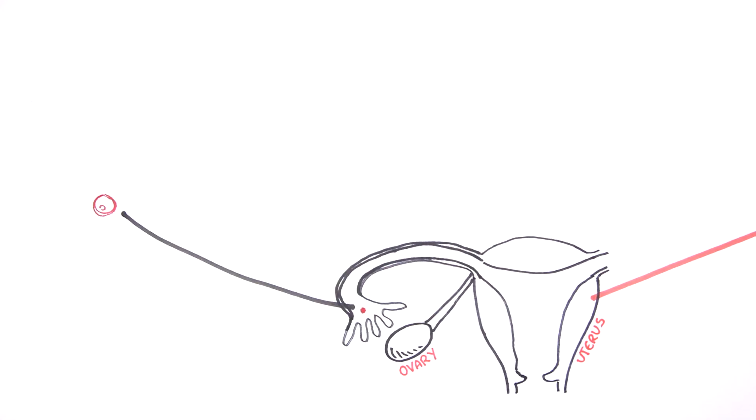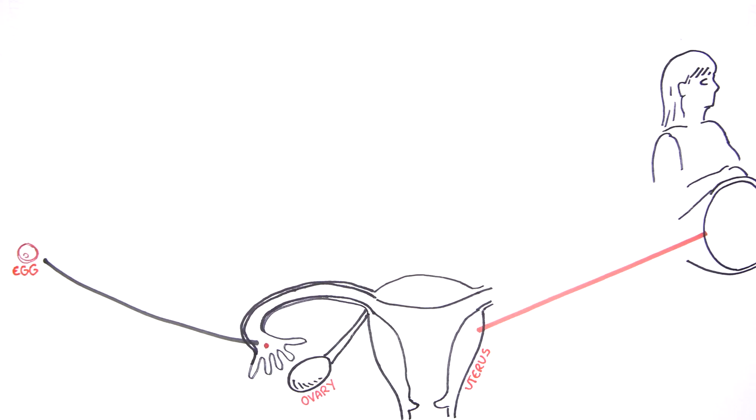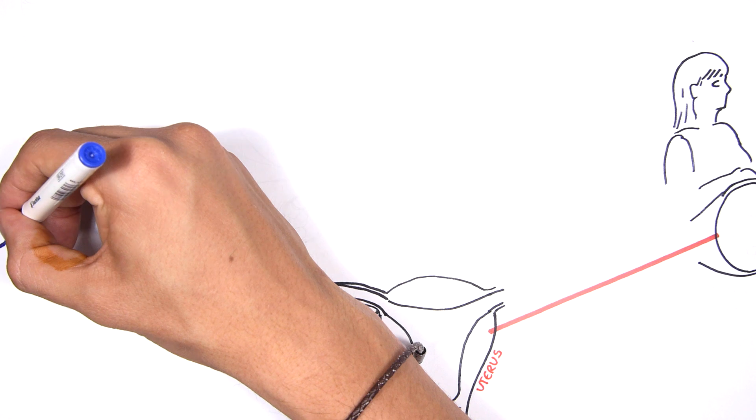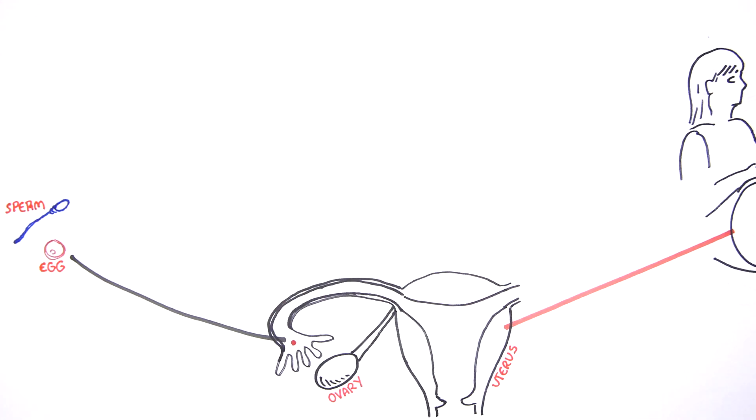Initially, the egg that is released during ovulation carries the maternal DNA methylation pattern. The sperm that will fertilize the egg carries the paternal DNA methylation pattern.